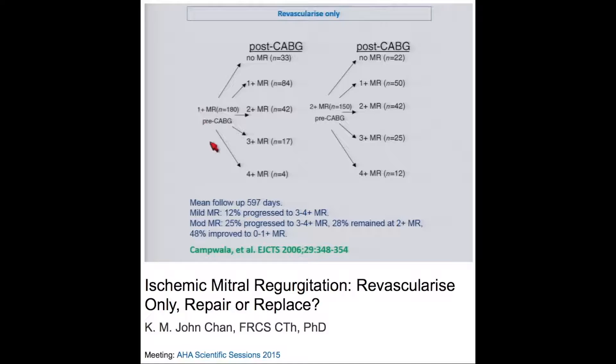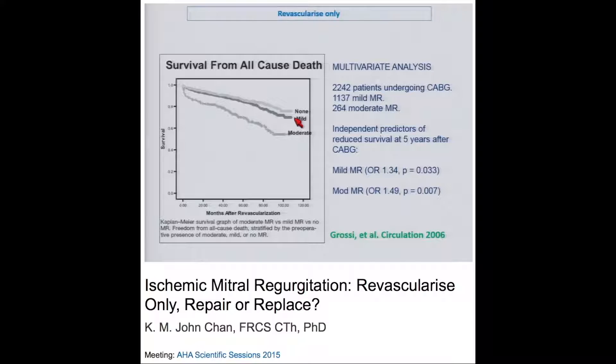As shown in this study, patients with 1+ MR — the vast majority stay as mild MR or even improve to none. Only 12% progress to 3 or 4+ MR, so 88% of these patients with mild MR do very well with just revascularization. However, it is not a benign condition — mild MR was an independent predictor of reduced survival at 5 years following CABG, though this may reflect poorer LV function rather than the MR itself.